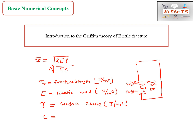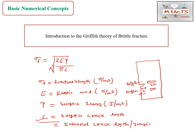C is the surface crack length. If the question gives the surface crack length, we directly put that value as C. If they give the internal crack length, we note that the total internal crack length equals 2C. So if the internal crack length is 5, then C equals 2.5. We then put this C value directly into the formula to calculate the required values.